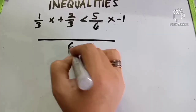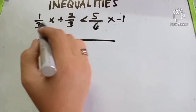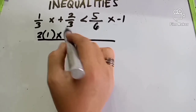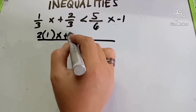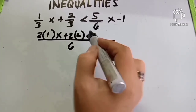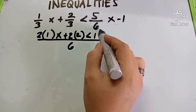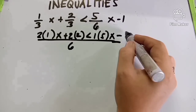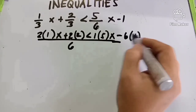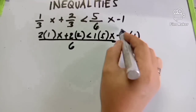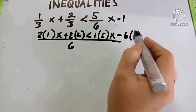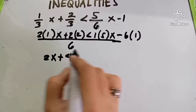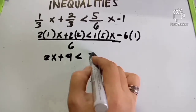Using LCD 6: 6 divided by 3 is 2, multiply by X gives 2X. 6 divided by 3 is 2, multiply by 2 gives 4. Then less than. 6 divided by 6 is 1, multiply by 5X gives 5X. And 6 divided by 1 times 1 gives 6. So we have 2X minus 4 less than 5X plus 6.